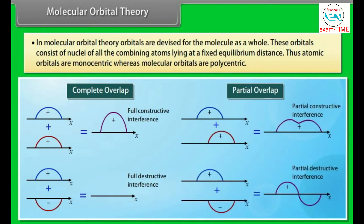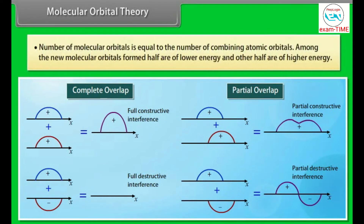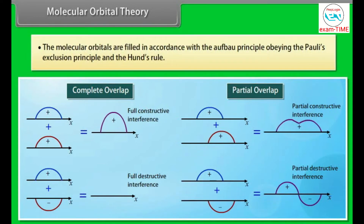In Molecular Orbital Theory, orbitals are devised for the molecules as a whole. These orbitals consist of nuclei of all the combining atoms lying at a fixed equilibrium distance. Thus, atomic orbitals are monocentric whereas molecular orbitals are polycentric. Molecular orbitals are formed by combination of atomic orbitals of nearly the same energy and proper symmetry. The number of molecular orbitals is equal to the number of combining atomic orbitals. Half are of lower energy and half are of higher energy. Molecular orbitals are filled in accordance with the Aufbau principle, obeying Pauli's exclusion principle and Hund's rule.